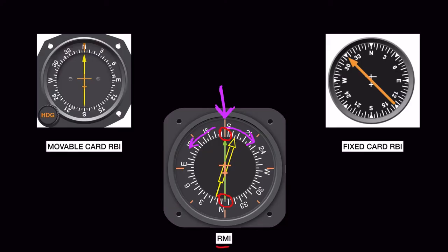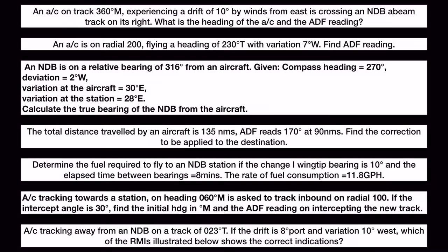An RMI can have one or more needles — usually two. There is a green needle and a thicker yellow needle. One needle is for the NDB and the other is for the VOR. We'll ignore the yellow needle for now and talk about VORs in the next video. Let's now look at the types of questions which can be asked from this navigation.